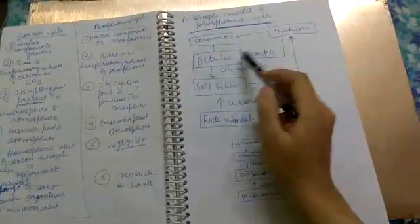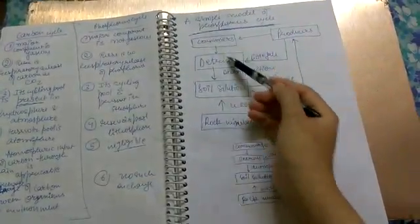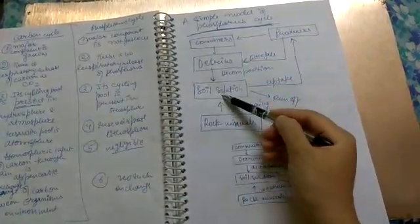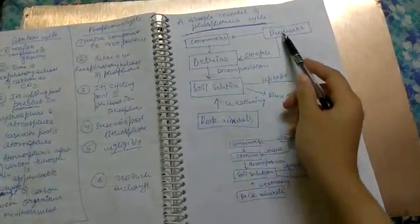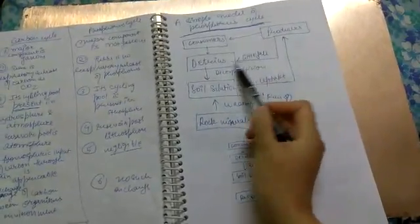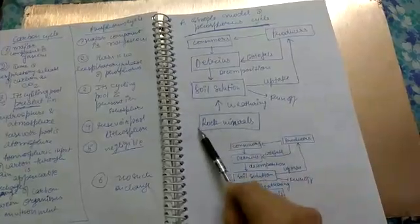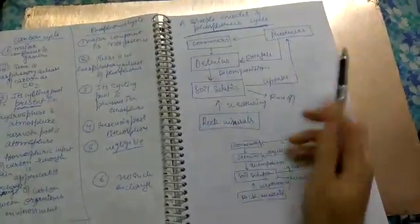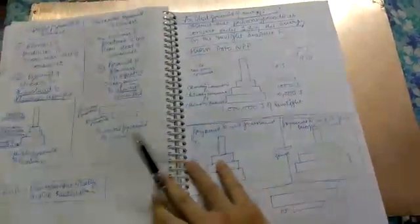Simple phosphorus cycle: producers, consumers, detritus, then soil solution. There's some uptake by producers, and from producers leaf fall occurs, some runoff happens, and from rock through weathering, phosphorus enters soil solution. This is the phosphorus cycle.